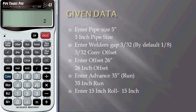Press 26 inch offset and enter advance which is run. Press 35, press inch, and press run. Enter roll as 15 inch.